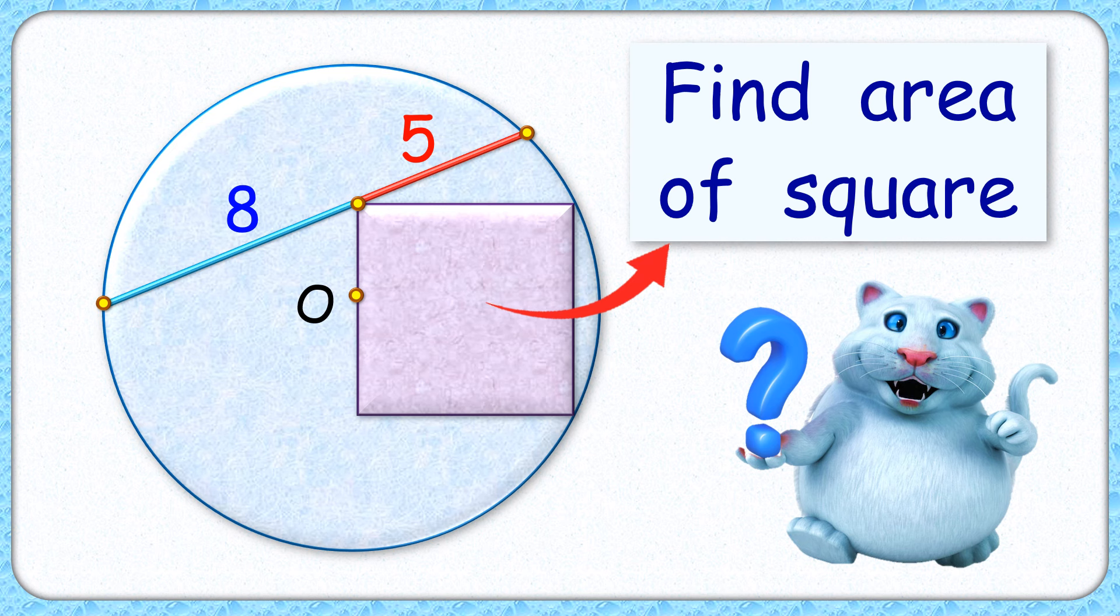Welcome to this interesting question. We have a square inside a circle such that one of its sides is passing through the center of the circle.